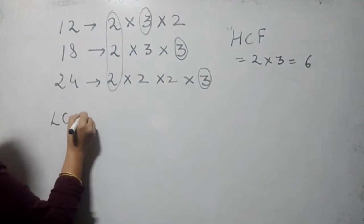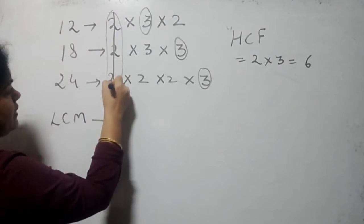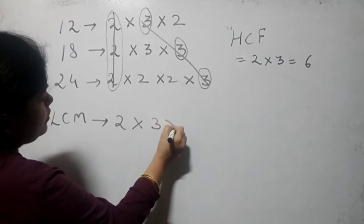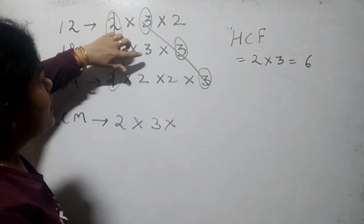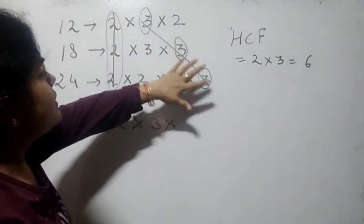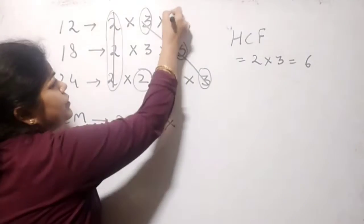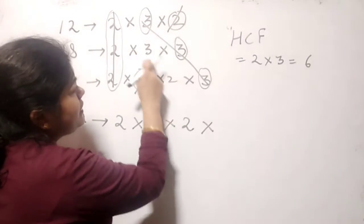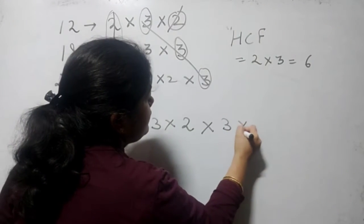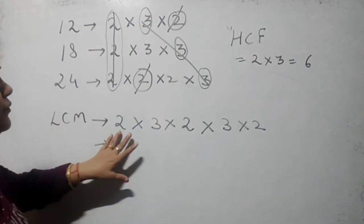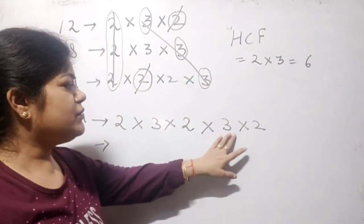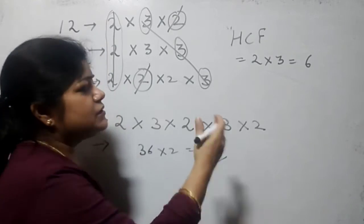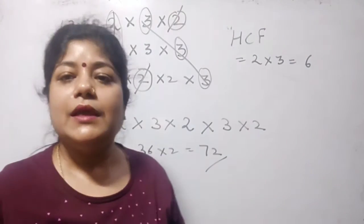How will you find LCM? For the common 2s, just cancel them — it becomes 2. For the common 3s, just cancel them — it becomes 3. Now, 3 doesn't come in any remaining ones, but 2 and 2 do — cut both 2s and write one 2. Now we are left with 3 and 2, and again 3 and 2. Multiply them all: 2×3 is 6, 6×2 is 12, 12×3 is 36, 36×2 equals 72. So LCM is 72.